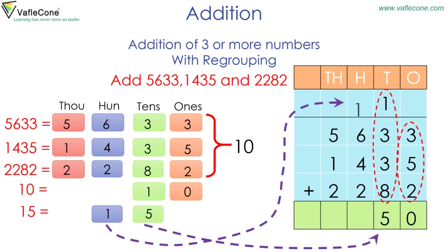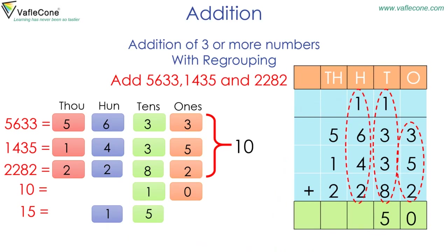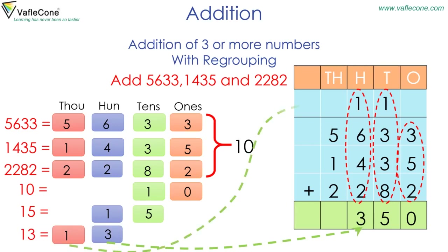And one carried to the hundreds place. Start adding at the hundreds place: one plus six plus four plus two is equal to thirteen. That is one thousand and three hundreds. Placing three at the hundreds place and one carried to the thousands place.